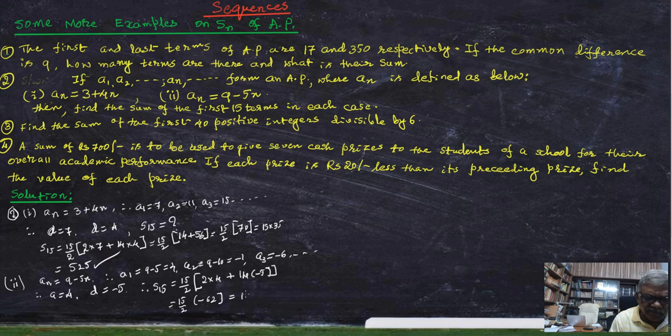And that is 15 into minus 31. The answer is minus 465. This is the answer.